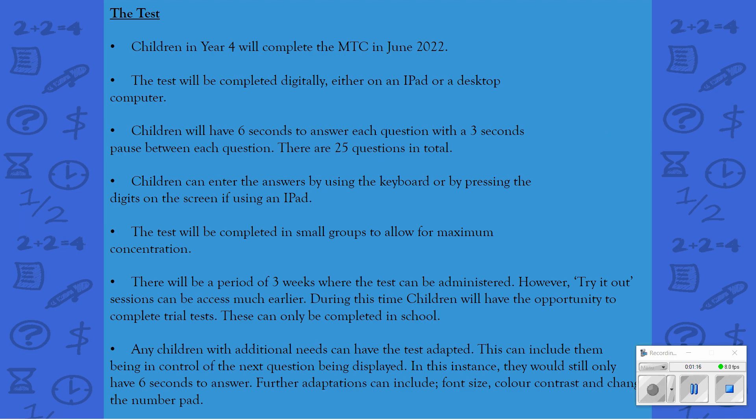The test itself is going to be completed by all Year 4 children in June this year. The test is the first digital test designed by the government and it will be completed either on an iPad or on a desktop computer. The test itself comprises of 25 questions. Children will have an additional three practice questions at the beginning but the 25 questions are the ones that are marked. Children will have six seconds to answer each question, and once the question is answered and it disappears there will be a three second pause between each question.